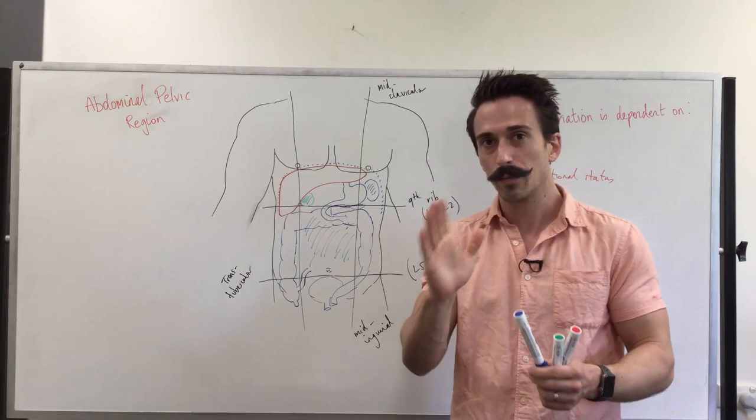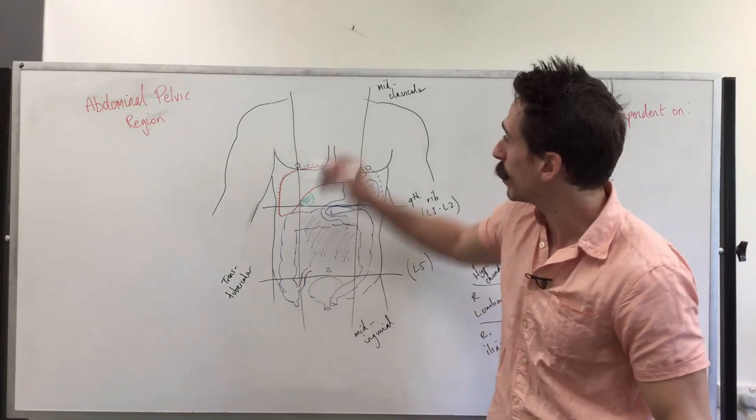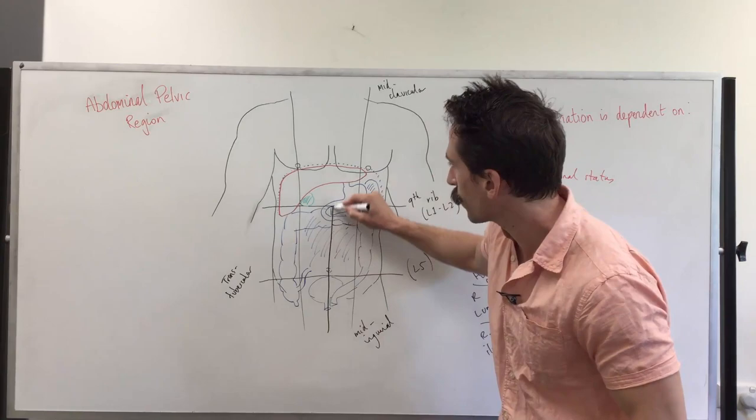Let's have a look at the four quadrants. This is easier. The four quadrants simply break it up into four areas. Now it's going to make this look a little bit messy, but let's draw over the top. You simply go down the midline through the belly button.